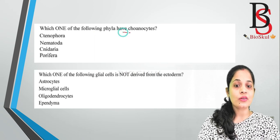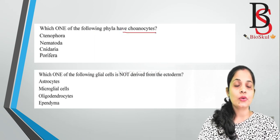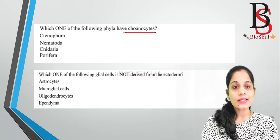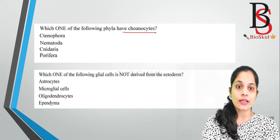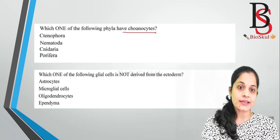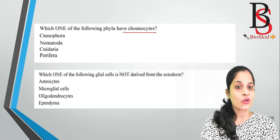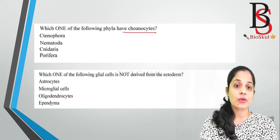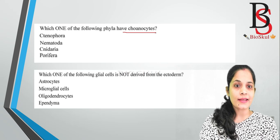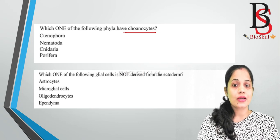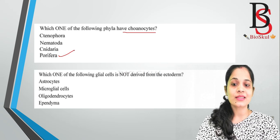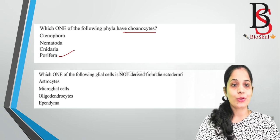Question nine: which one of the following phyla have coanocytes? Coanocytes, also called collar cells, are flagellated cells and are characteristic of sponges. They help in reproduction, nutrition, and excretion. Sponges belong to phylum Porifera. The correct answer is Porifera.